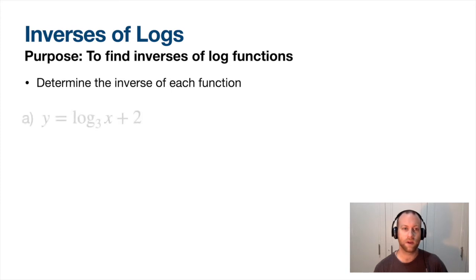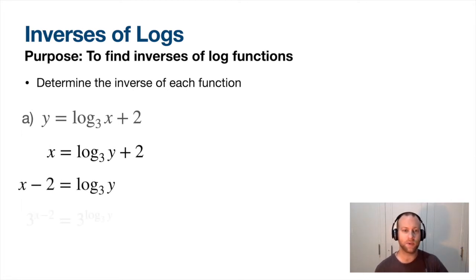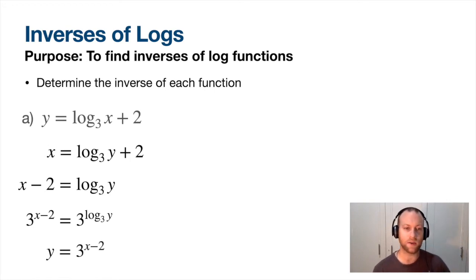Let's try inverses. Here's our equation - let's write an inverse. You remember the inverse process: switch x and y and solve for y. First subtract 2, then in order to get rid of log base 3, put both sides as 3 to the power of - 3 to the power of log base 3 cancels out and I end up with just y. So y equals 3 to the power of x minus 2. Notice the inverse of a log is an exponential.